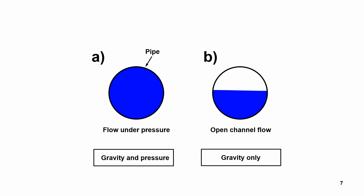Here's the difference between pipe flow, such as a water distribution system, and open channel flow. Pipe flow can also be considered as open channel flow, especially if there's air in the pipe. In a pressurized system, both gravity and pressure come into play, but in open channel flows — even in a pipe like a wastewater distribution system — only gravity is involved in the equations.